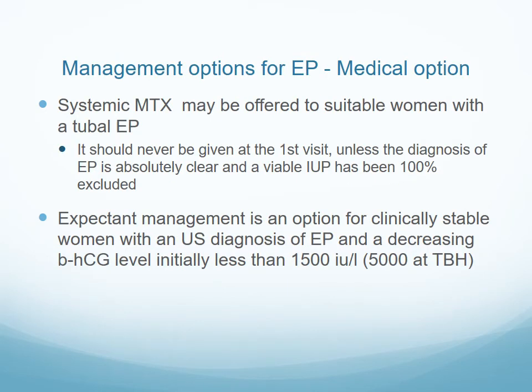Medical management using systemic methotrexate can be offered to suitable women with a tubal or other ectopic pregnancy, but should never be given at the first visit unless the diagnosis of ectopic is absolutely clear and a viable intrauterine pregnancy has been excluded 100%. Expectant management is an option for clinically stable women with an ultrasound diagnosis of ectopic and documented decreasing beta-hCG levels, initially between 1500 and 5000.